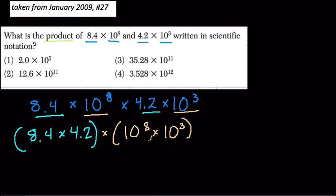So with that being said, here, 10 to the 8th times 10 to the 3rd is 10 to the 11th. Add those exponents.